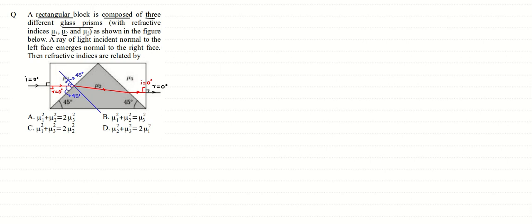Drawing the normal at the point where the ray leaves the second prism, we find that since this angle is 45° and the other angle is 45°, with the total being 90°, this angle here is also 45°. This 45° angle is important because it is the angle of refraction at that exit surface.